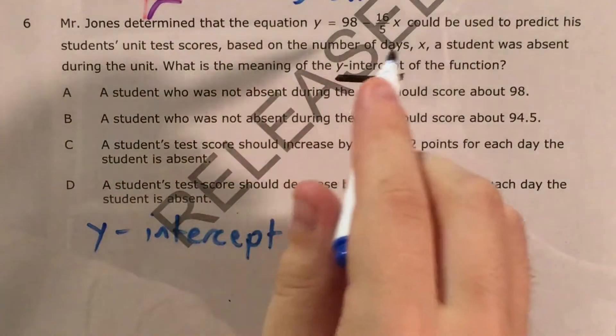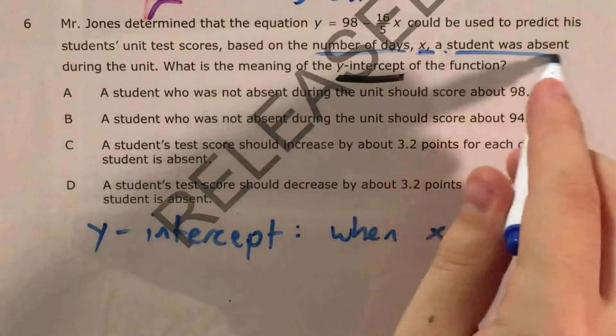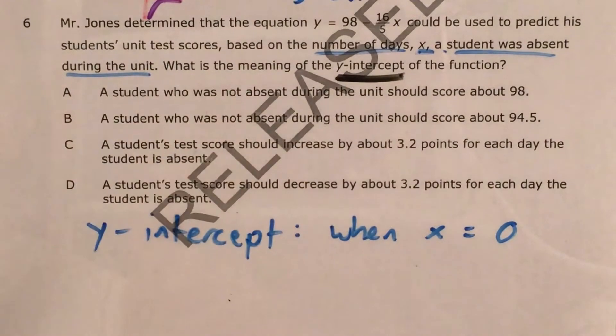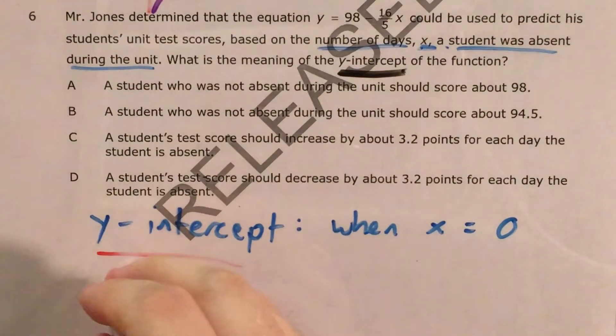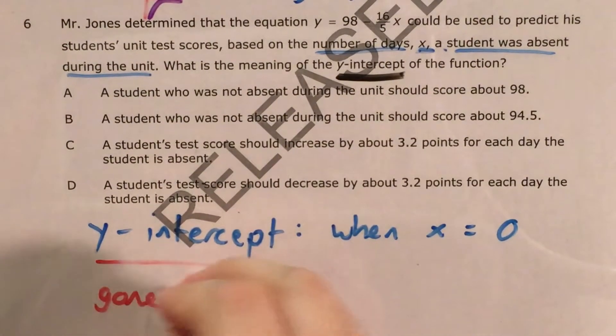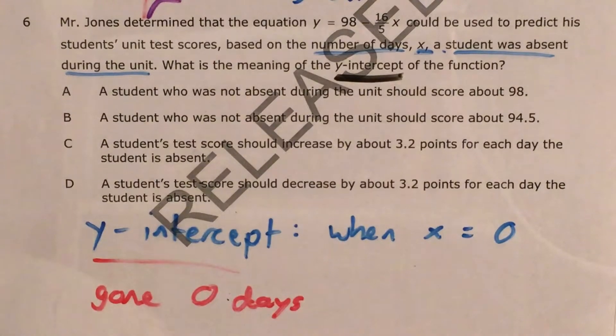So if I look back at the problem, x is the number of days that a student was absent during the unit. Now if x is 0, then what that tells me is that according to the problem, the y-intercept means that a student was gone 0 days. That's what the y-intercept means.